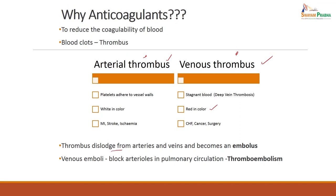If the thrombus dissolves from an artery or vein and goes into circulation, you call it an embolus. So there is thrombus formation in deep venous thrombosis and you have a condition like pulmonary embolus, or this thrombus goes as an embolus and blocks smaller arteries like in coronary artery disease or stroke. In the case of a venous embolus blocking the artery in pulmonary circulation, you call it a thromboembolic phenomenon — thromboembolism.